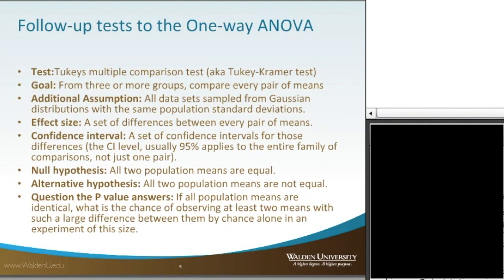The effect size for Tukey's is the set of differences between every pair of means. The confidence interval we look at with Tukey's is the confidence interval for those differences — usually 95%, which applies to the entire family of comparisons, not just one pair. When you set the confidence interval with Tukey's, it applies the same confidence interval to each of the multiple pairs; you can't apply 95% to some pairs and 99% to others — it would all be the same. The null hypothesis for Tukey's is that all population means are equal, and the alternative is that all population means are not equal, in alignment with the ANOVA.